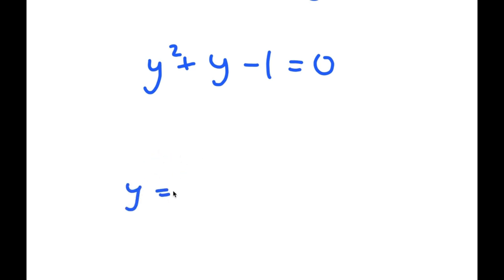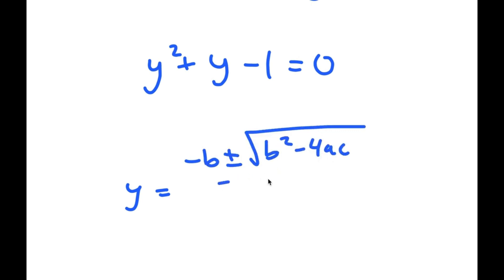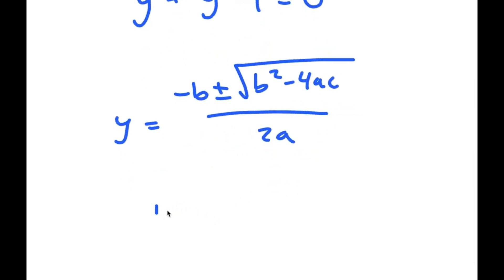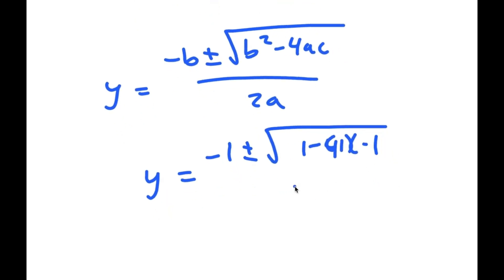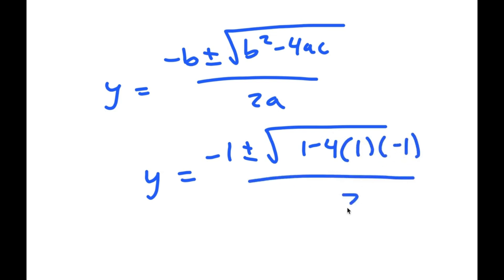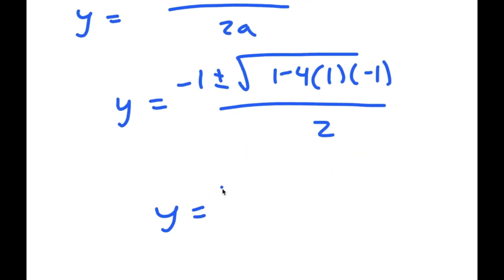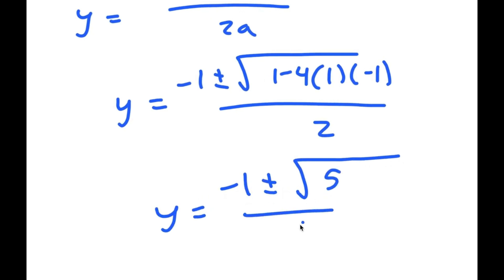If I use the quadratic formula — negative b plus or minus the square root of b squared minus 4ac, all over 2a — I get y is equal to negative 1 plus or minus the square root of 1 minus 4 times 1 times negative 1, all over 2, which is equal to negative 1 plus or minus the square root of 1 plus 4, which is 5, over 2.